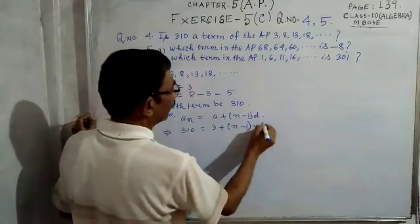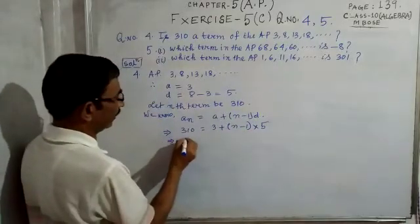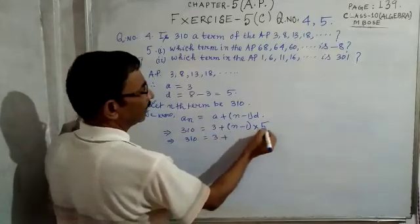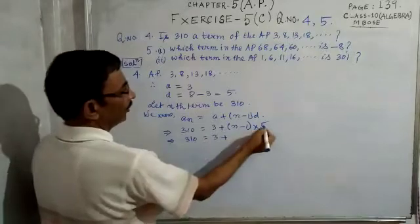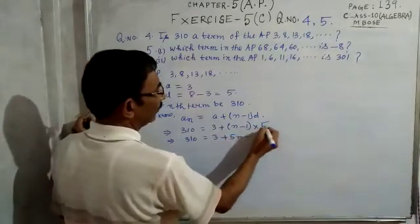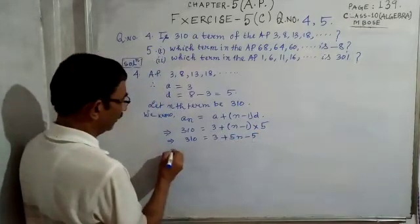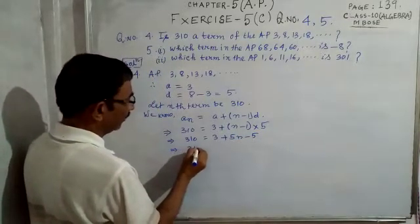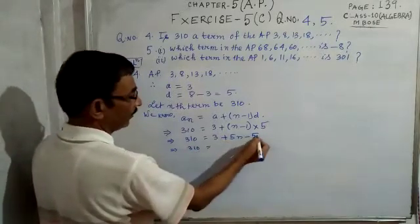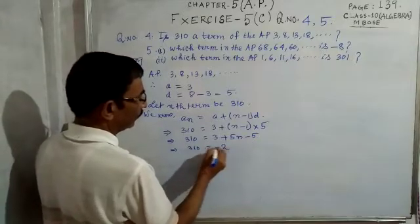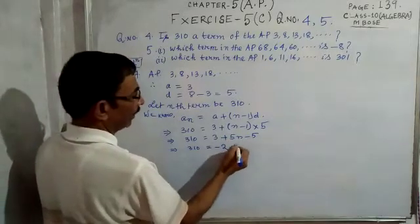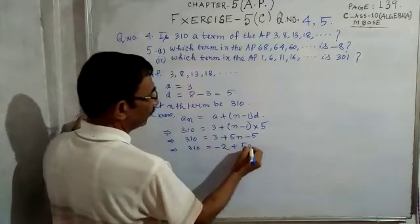Substituting: 310 = 3 + (n − 1) × 5. Expanding: 310 = 3 + 5n − 5. Simplifying the constants: 3 − 5 = −2, so 310 = −2 + 5n.